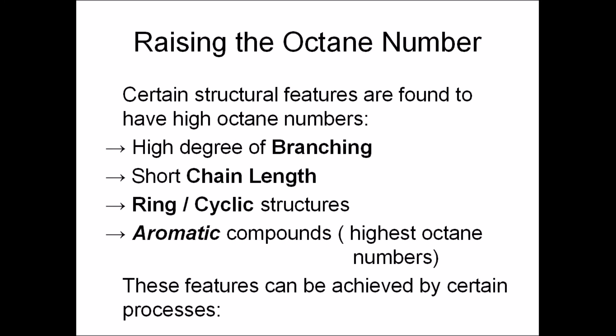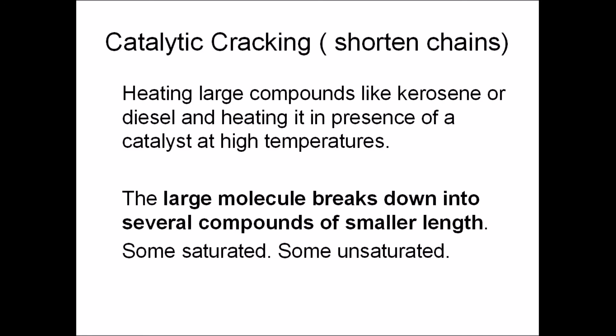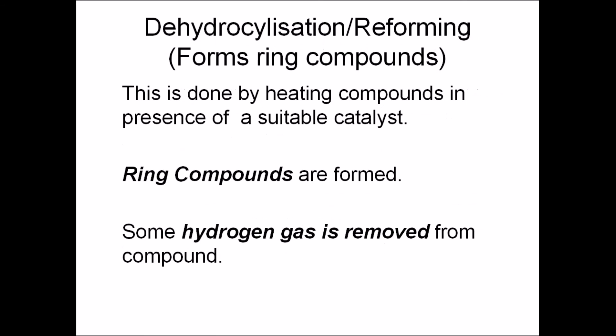A change in structural features also increases the octane number. Short chains, branched chains, ring structures, and aromatic hydrocarbons all have high octane numbers. Straight chains are heated in the presence of a suitable catalyst which converts them into branched chains — this is called isomerization, as it makes different isomers of each compound. Longer chains are broken down into smaller ones by catalytic cracking. Dehydrocyclization forms ring compounds and some hydrogen gas.